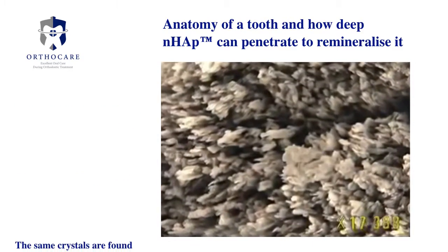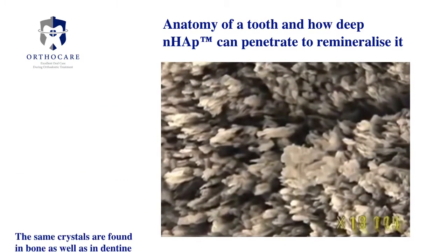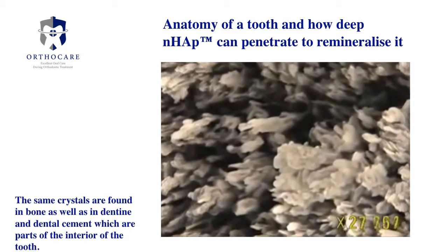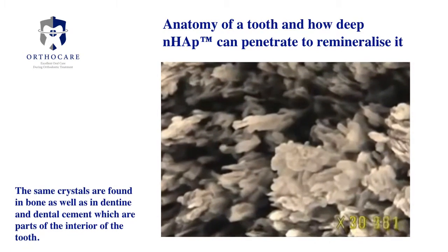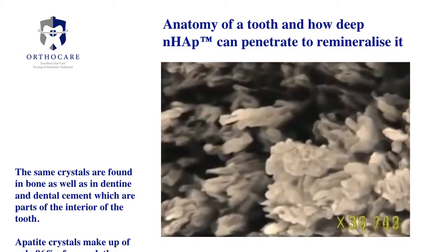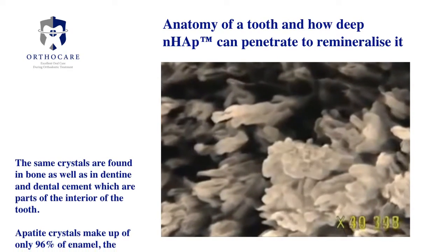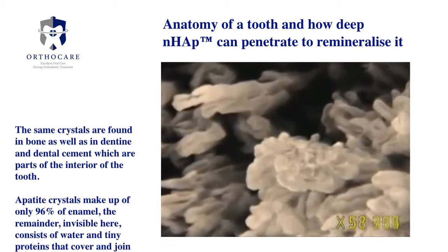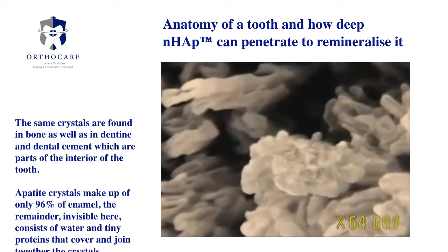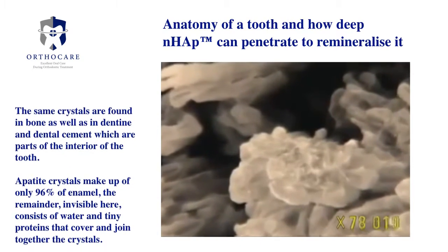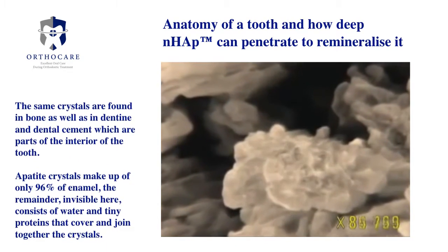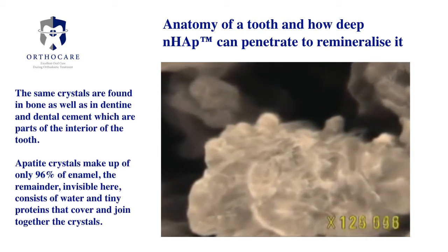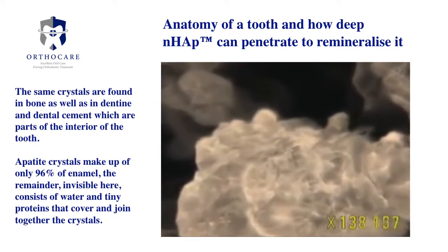The same crystals are found in bone, as well as in dentine and dental cement, which are parts of the interior of the tooth. Apatite crystals make up 96% of enamel. The remainder, invisible here, consists of water and tiny proteins that cover and join together the crystals.